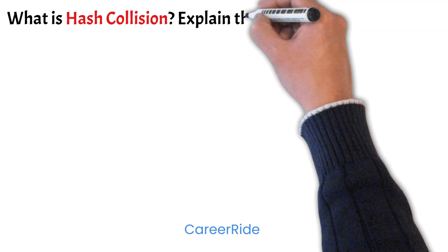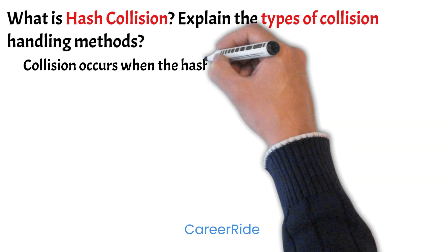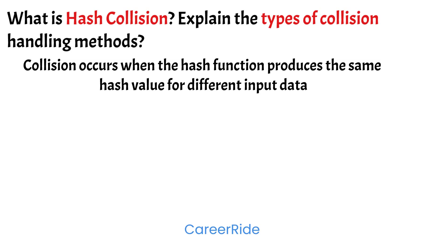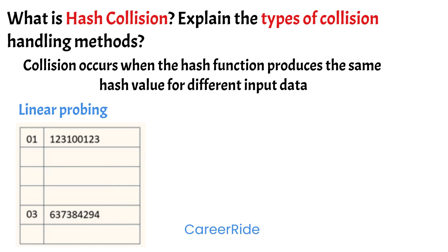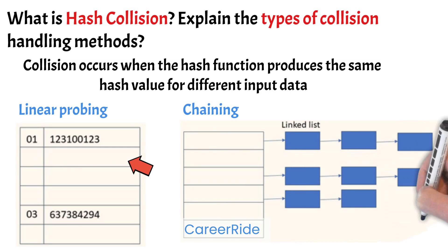What is hash collision? Explain the types of collision handling methods. A collision occurs when the hashing function produces the same hash value for different input data. We have two common ways of handling collisions. The first one is linear probing — in linear probing, a collision is handled by searching for the nearest available space linearly from the space that was already occupied. Next is chaining — in the chaining method, each block of the hash table contains a linked list. Therefore, when a collision occurs, instead of looking for the next free space as done in linear probing, it creates another node in the linked list and adds the key-value pair there.